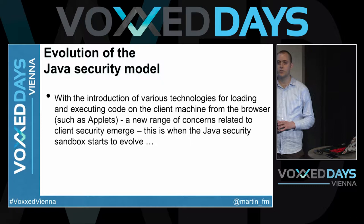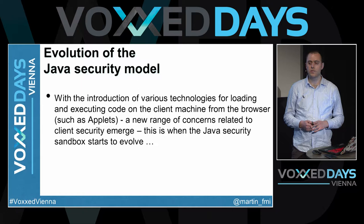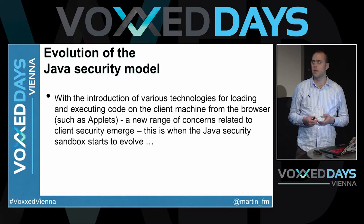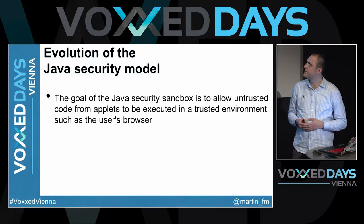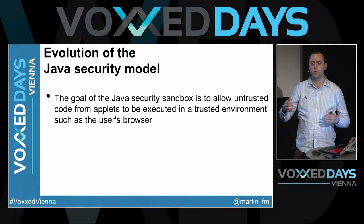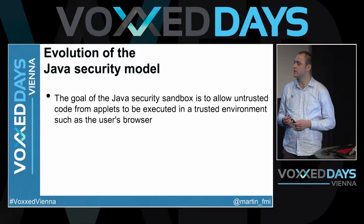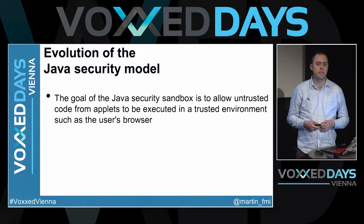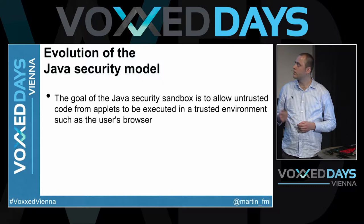This is when the security sandbox model of the Java platform starts to evolve. It deals with the possibility to execute code in an unsecured environment, such as the user's browser. The goal of the Java security sandbox model is to allow initially untrusted code from applets to be executed in a safe environment. This model evolves to a wider range of use cases, such as Java application servers, OSGI environments, and different types of Java managed environments that need to execute source code in a user's environment and protect it well.